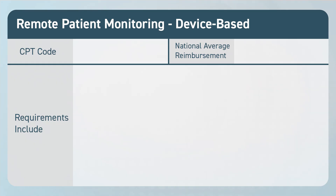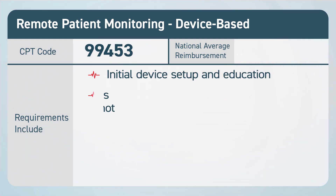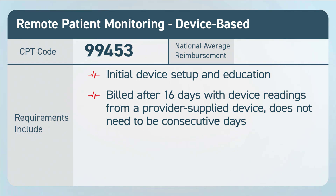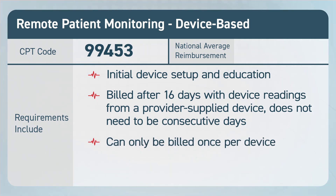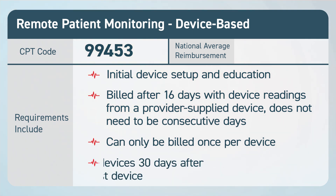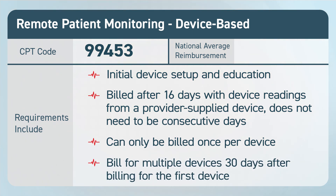The first is CPT code 99453. This code is for the initial setup of the provided device. To bill for 99453, a patient must transmit a minimum of 16 days with readings from a provider-supplied device. The readings do not have to occur within one calendar month, nor do they need to be 16 consecutive days. This is a one-time code that can be billed after the 16th day with readings. 99453 can only be billed once per device. If a patient is given multiple devices, they must be billed with code 99453 on different months. The current national average reimbursement for 99453 is $20.